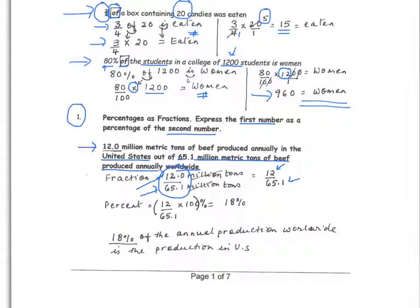This is a fraction, and if we want to change it to a percent, all we have to do is multiply by 100%. Note that 100% equals 100 over 100, which equals 1 — so we're not changing the number, just writing it differently. Using a calculator, we find that the US produces 18% of the annual production worldwide.